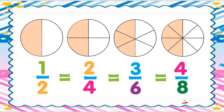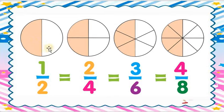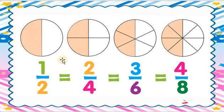The denominator shows the whole part and the numerator shows the number of parts. See one circle divided into two parts — one part is shaded yellow and one is blank. That's why we write one upon two. The circle has two parts and one is shaded, so the fraction is one upon two.